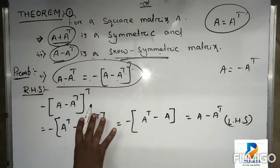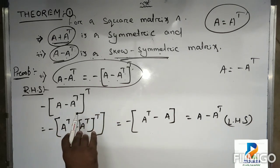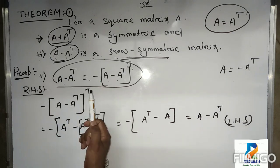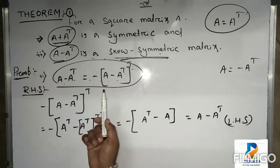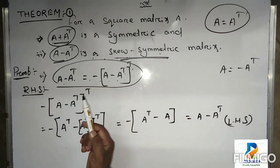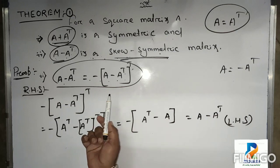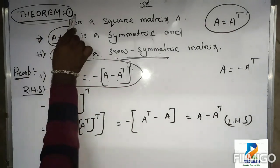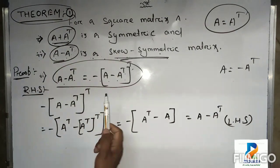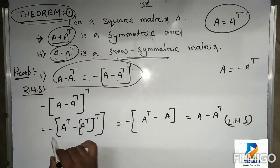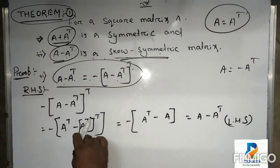In this class we have discussed: first, what is a symmetric matrix; second, what is a skew symmetric matrix; and one theorem showing how to express any square matrix in terms of symmetric and skew symmetric matrices.